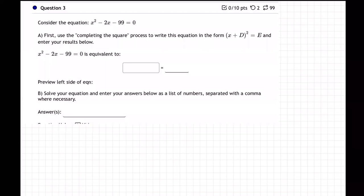Okay, so on this question, they're giving us x squared minus 2x minus 99 equals 0, and they're wanting us to say first use completing the square, use the completing the square process to write the equation in that form, enter your results below. Okay, so what are they talking about?